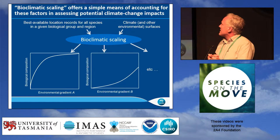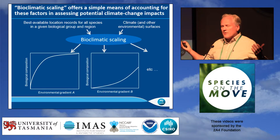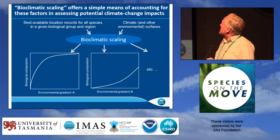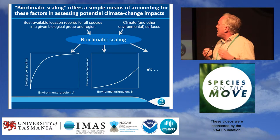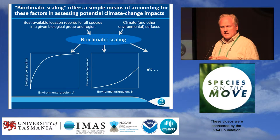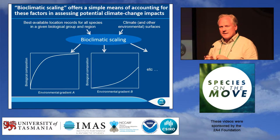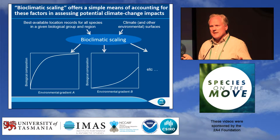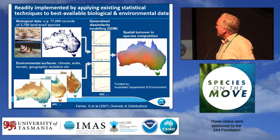So that brings us to this idea of bioclimatic scaling, which is simply the notion of using best available location records for all species in a group and region of interest, combining that with present-day climatic surfaces to actually scale these environmental gradients that we're working with. This lets masses of biological data tell us how to scale that multi-dimensional environmental space in a way where distances within that space better match turnover in biological composition.